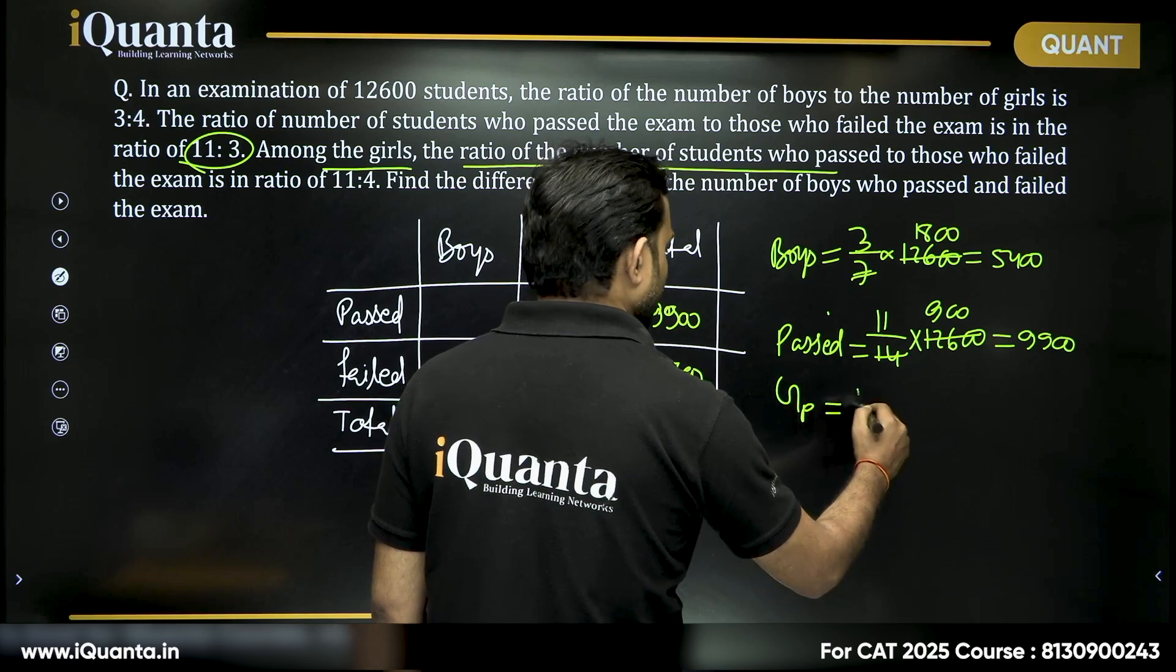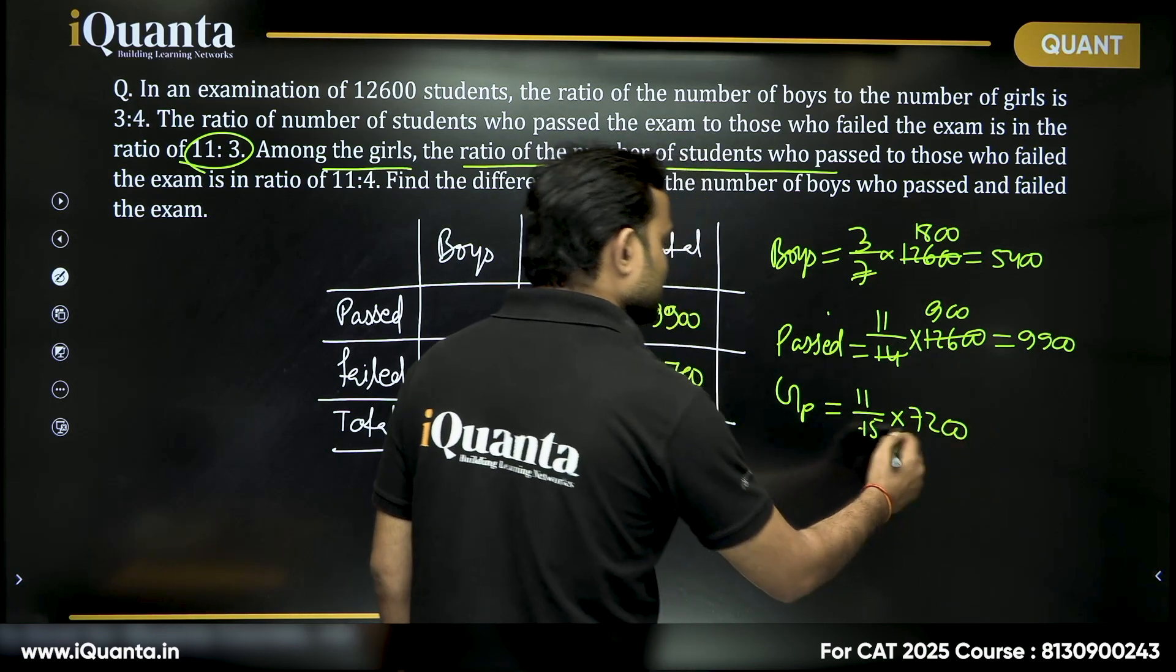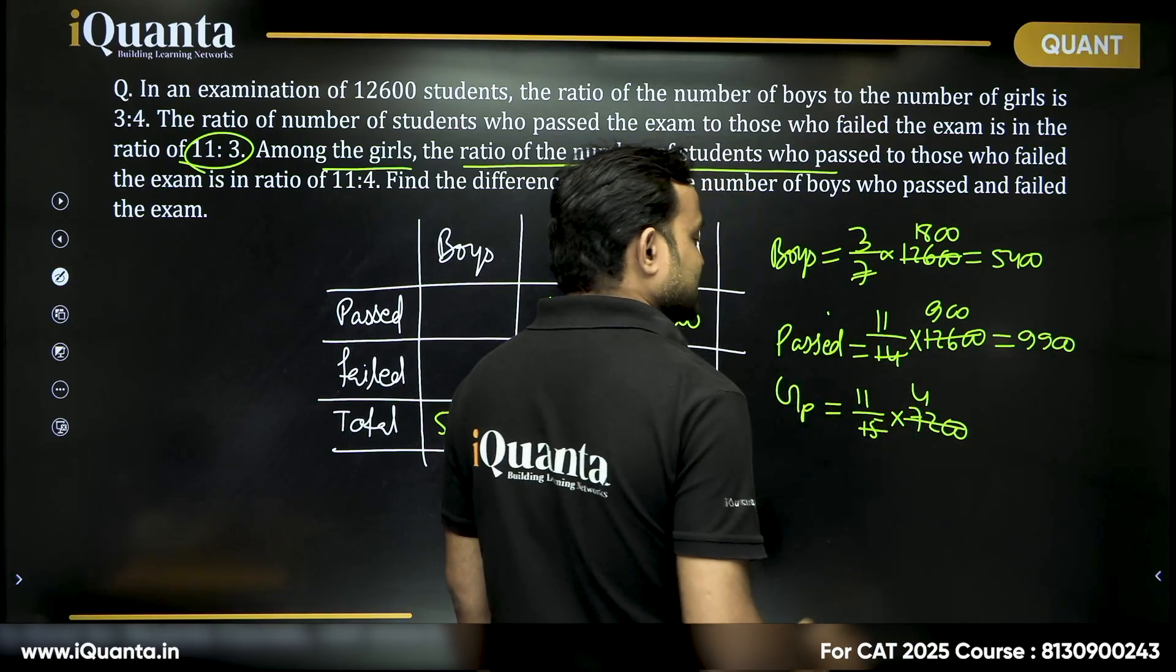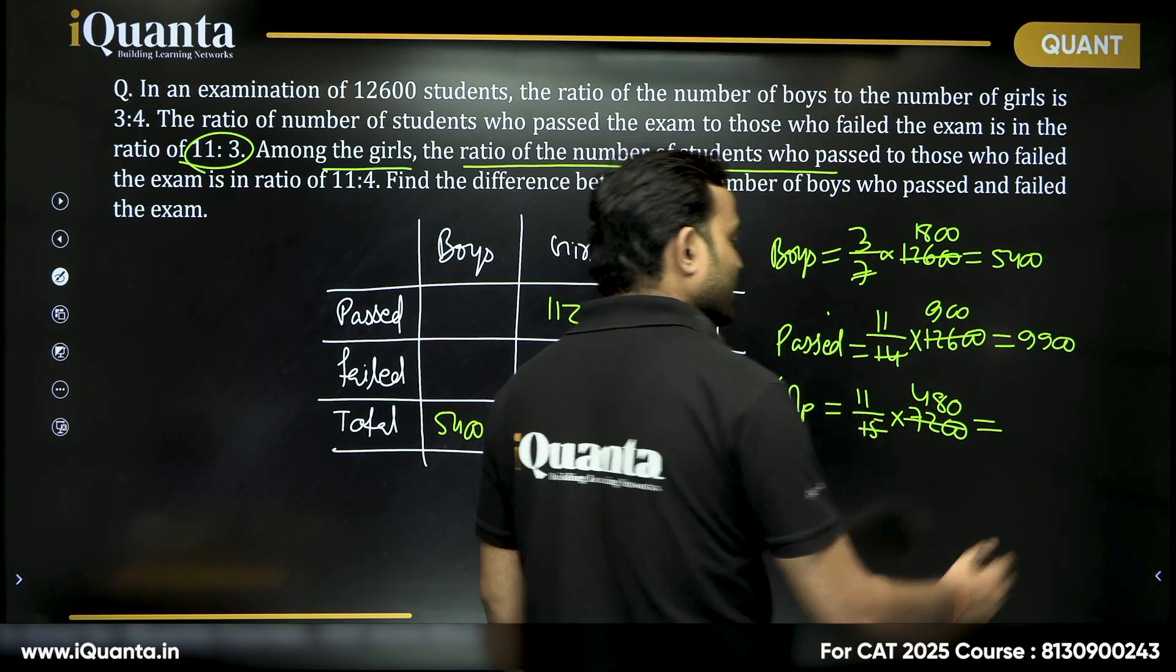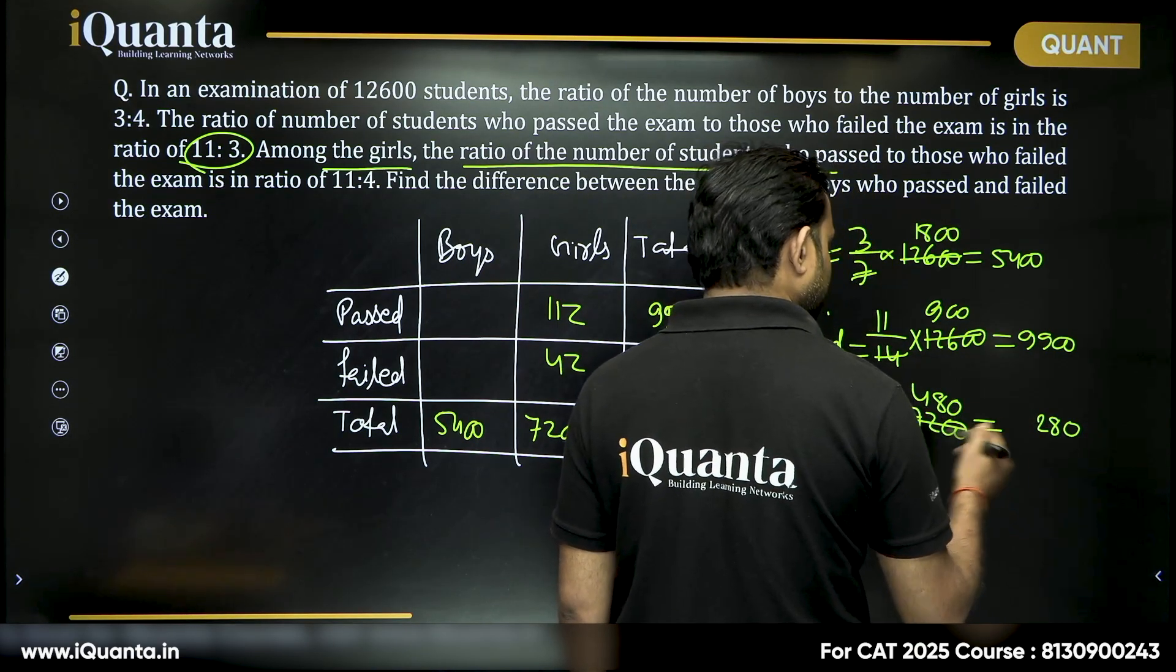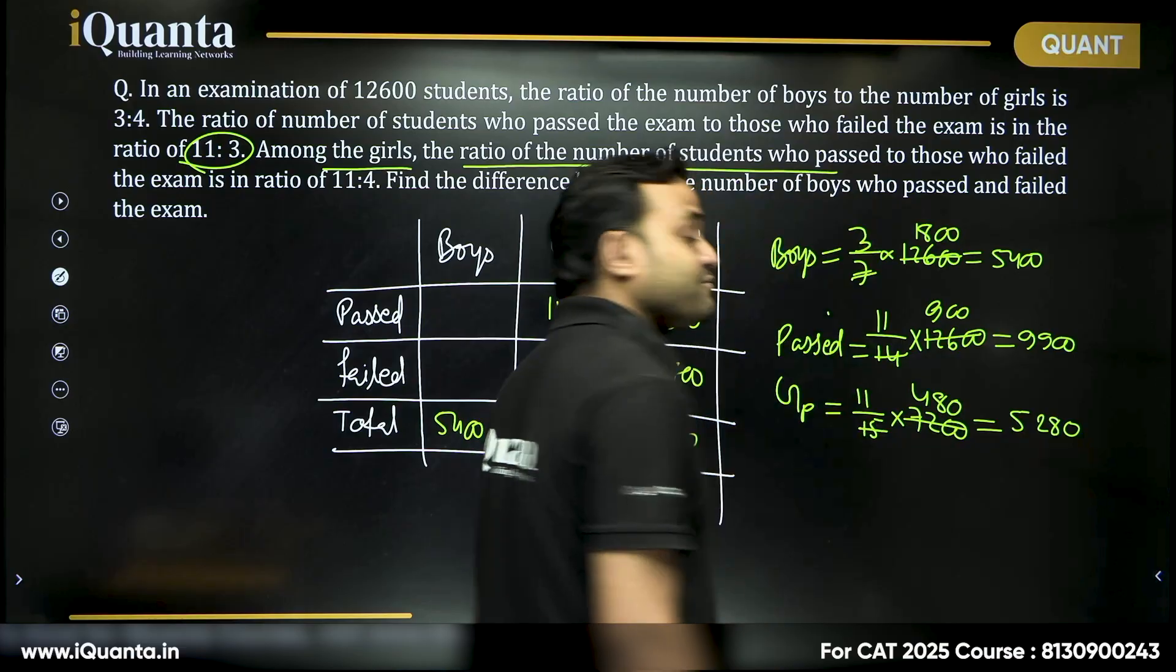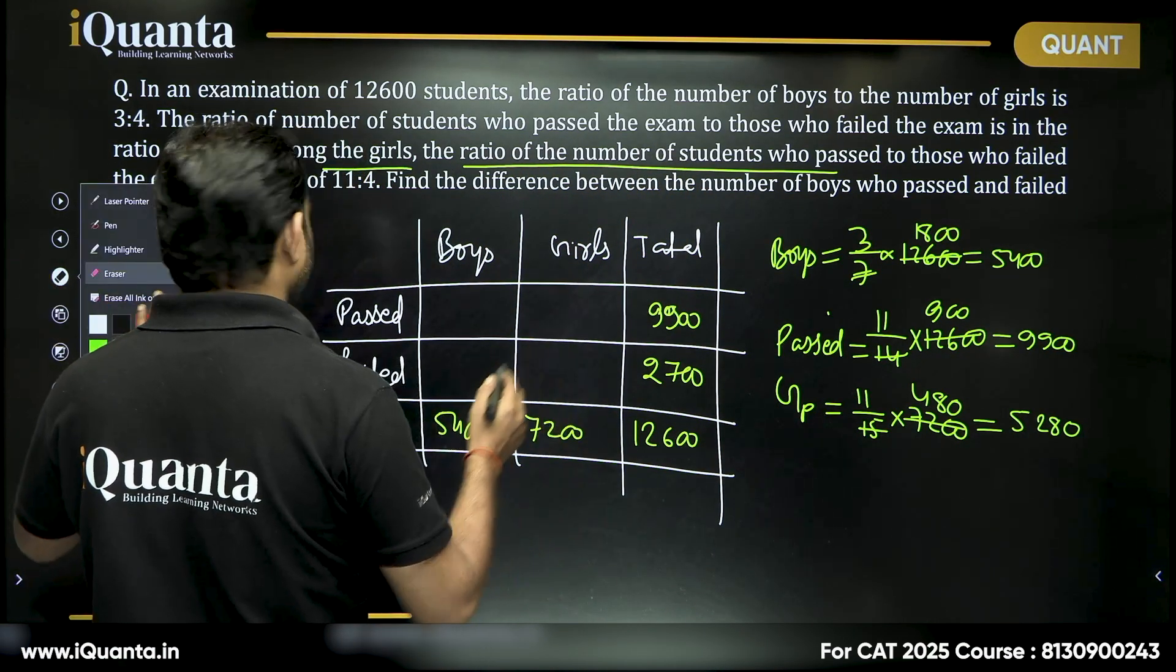So how many girls passed? Girls who passed will be 11 by 15 of 7,200. 4 times 60, 8 times 120, 480 into 11 which is 0, then 8, then 2 and then 5, 5,280. These are the number of girls who passed.